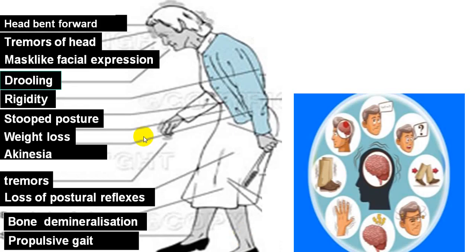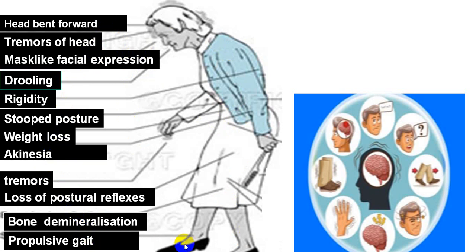This is a typical picture: head bent forward, tremors of the head, mask-like face, drooling, rigidity, stooped posture, weight loss, akinesia, tremors, loss of postural reflex, bone demineralization, and propulsive gait — all very typical findings.